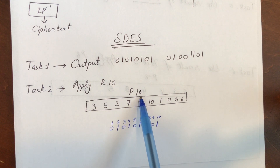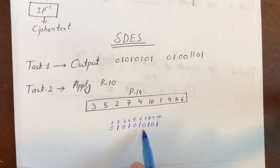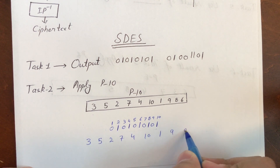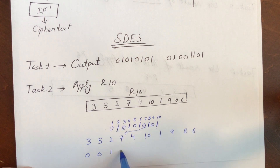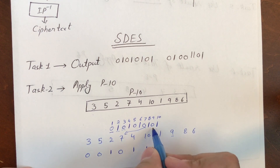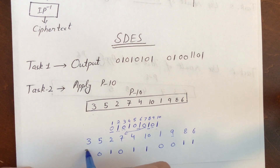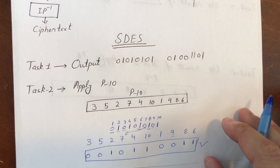For P10, we rearrange the bits according to this pattern: 3 5 2 7 4 10 1 9 8 6. So the bit at position 3 comes first, position 5 next, and so on. Working through: position 3 is 0, position 5 is 0, position 2 is 1, position 7 is 0, position 4 is 1, position 10 is 1, position 1 is 0, position 9 is 0, position 8 is 1, position 6 is 1. This is the result after P10.